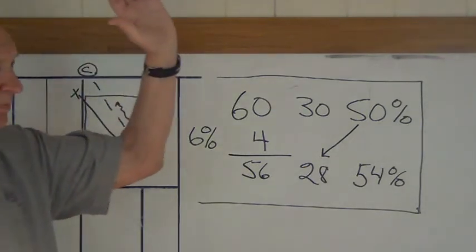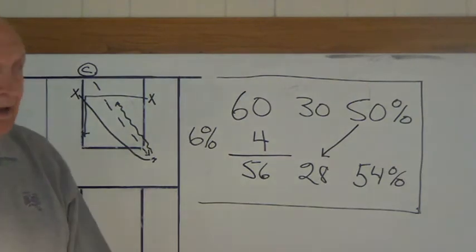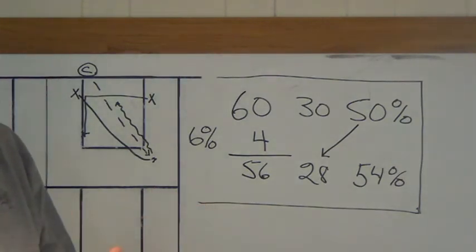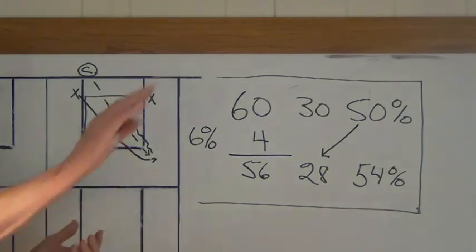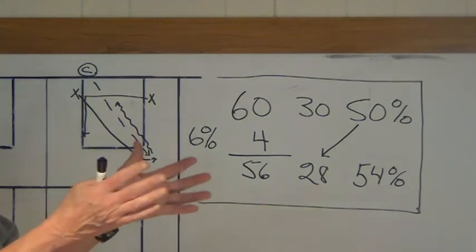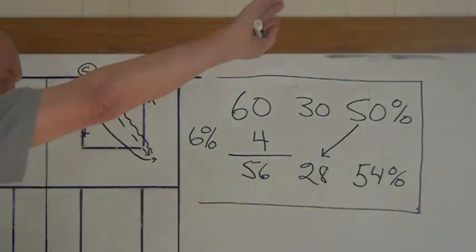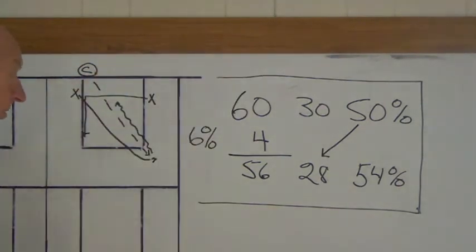But he had a tendency, like a lot of players, to come and just swipe down at it and consequently get fouls. We worked hard on that coming across. And it made me feel good when I saw a big picture in the paper of him blocking a shot. And he was using his cross arm. In fact, I cut the picture out and sent it to him.